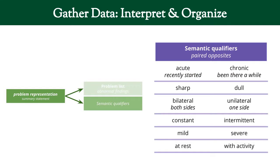When you find something abnormal, you want to describe it using semantic qualifiers — these are specific adjectives that are paired opposites. For example: acute versus chronic, where acute means something that recently started and chronic means something that's been there a while; sharp versus dull; bilateral versus unilateral; constant versus intermittent. This helps you differentiate and better describe a complaint or abnormal finding, so you can find something that isn't overlapping in the Venn diagram but is in its own area.